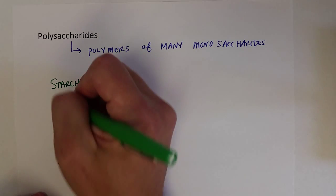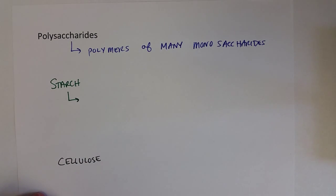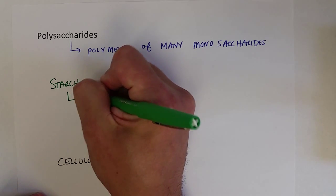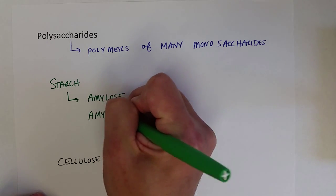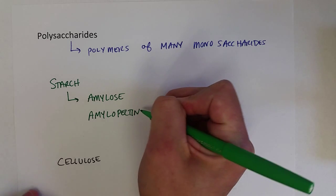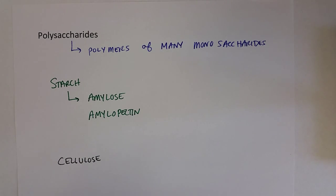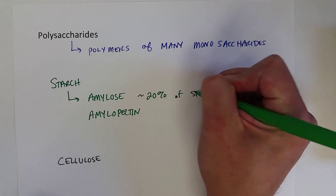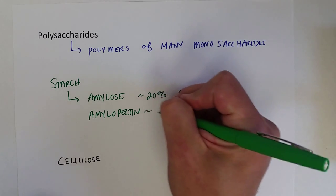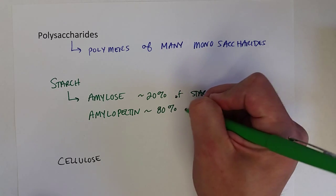The two types of polysaccharides within the starch family are amylose and amylopectin. Both are polymers of glucose and differ in how they are linked between the different monosaccharides. Amylose takes up about 20% of starch, and amylopectin is about 80% of starch.